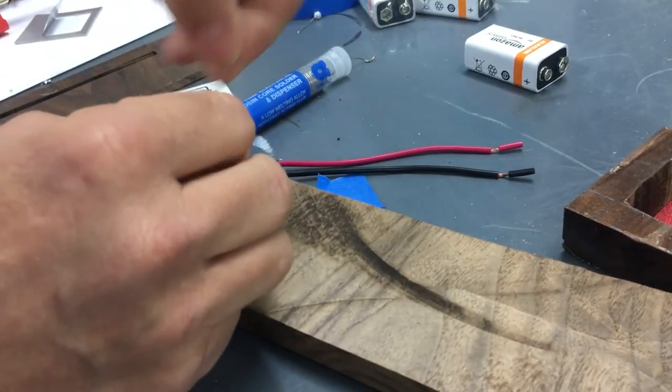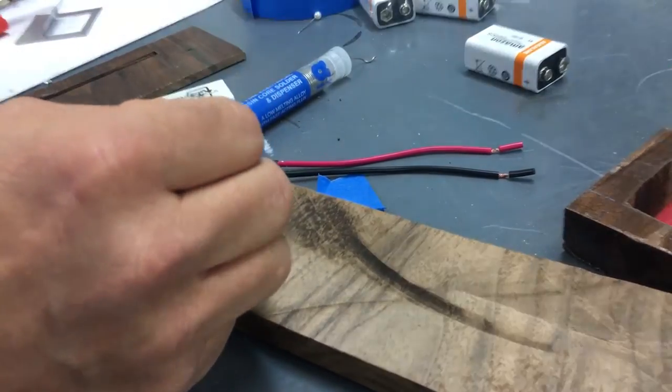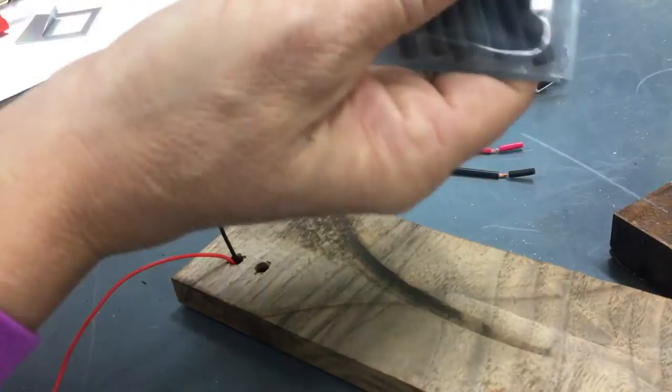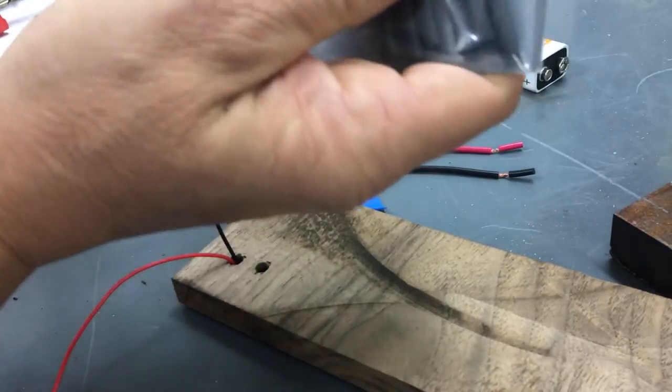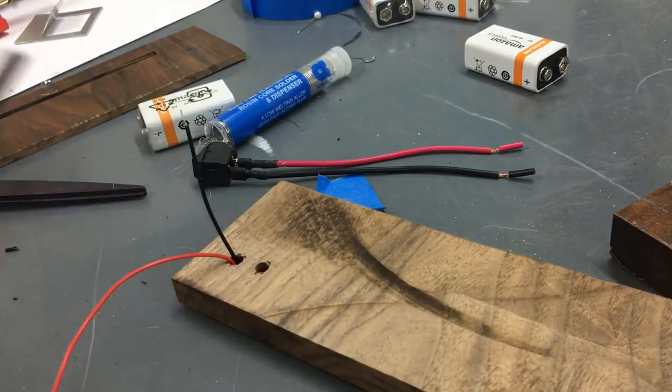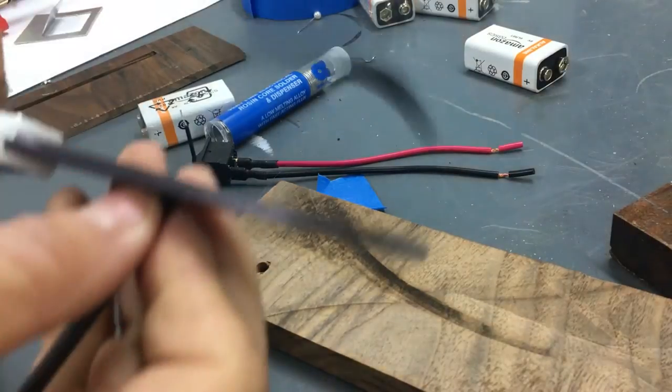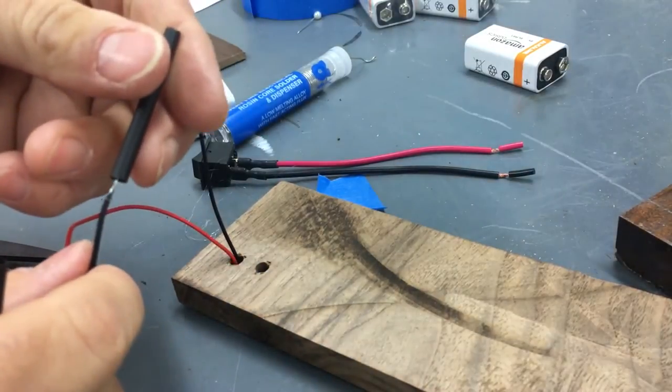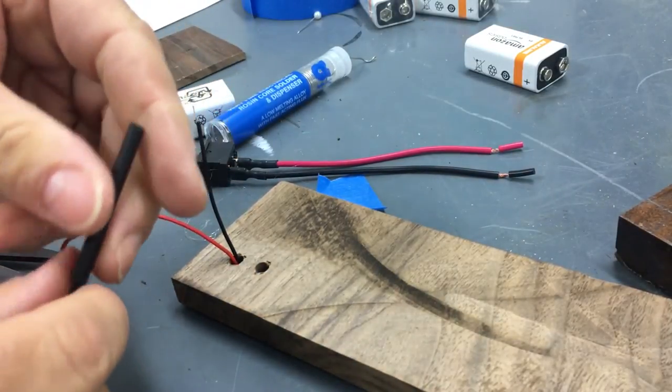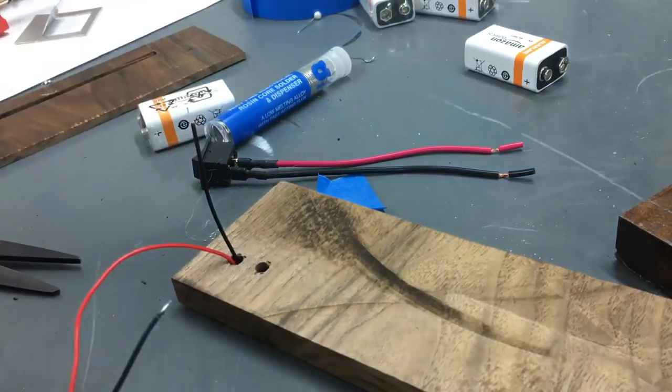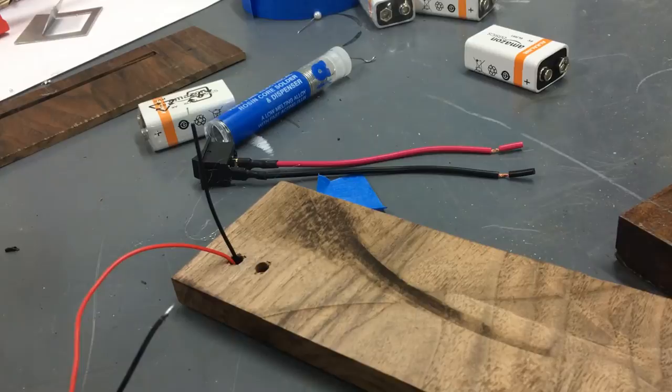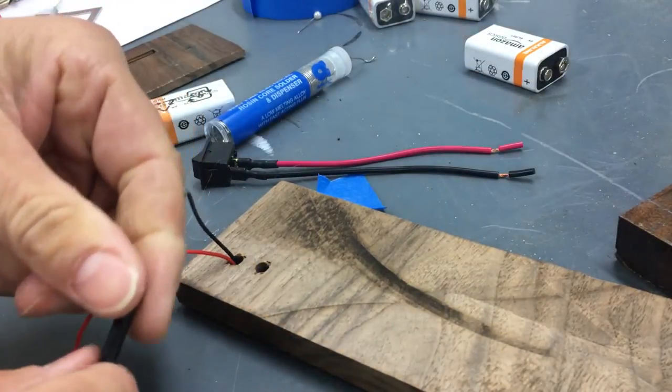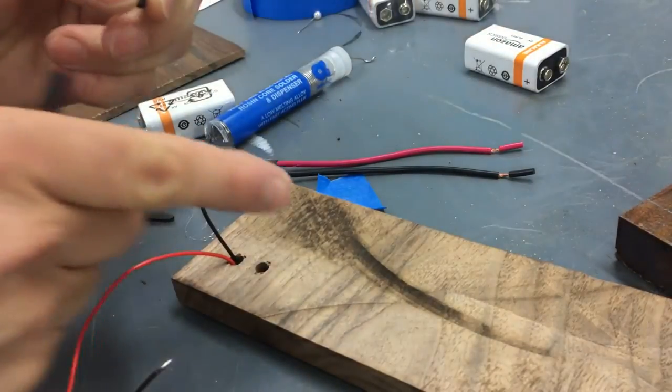Twist it. Now, I also bought some heat shrink so that I can cover these wires once I solder them and they're not exposed under there. So, I'm going to cut a little piece off and slip it on my wire first. I don't even need that much. I can save some, I think, and cut it in half. You put it on both sides.